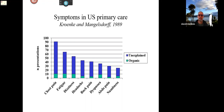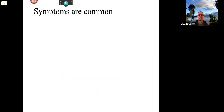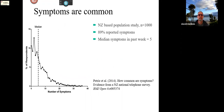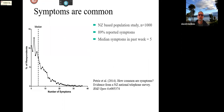Symptoms are common, and New Zealand data indicates we all get these things. The average number is five or six a week, slightly more in the elderly and in females, but not much really. Most symptoms just come and go and don't stick around. It's the ones that stick around that are often presenting to the doctor and may or may not get investigated or treated. Symptom experience is an extraordinarily common thing.